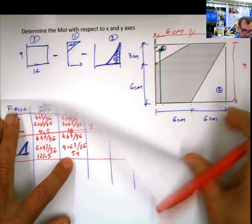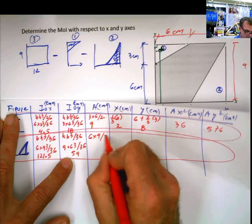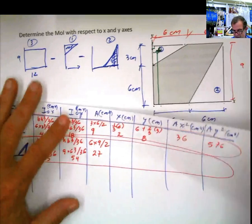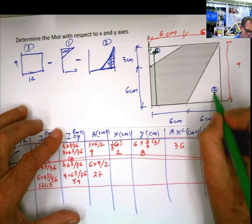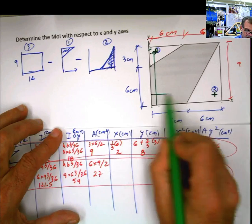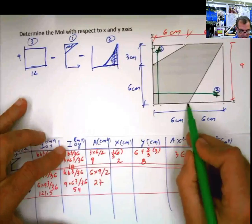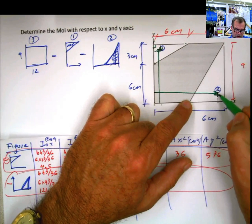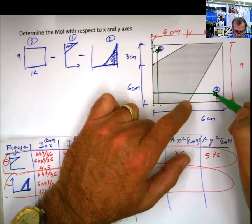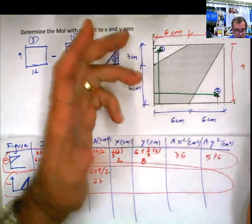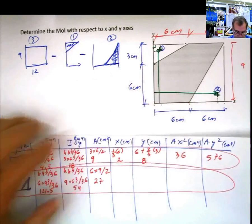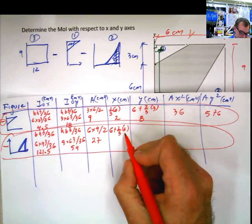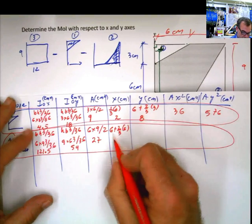Area. 6 times 9 divided by 2, 27. What is x? My centroid for figure 2 is located here. That means that x is going to be the distance from here to there. What is that? 6. But I know that this is 2 thirds of 6. Do you see how much it helps that you draw the centroid there? Then you don't even have to think. So this is going to be 6 plus 2 thirds of 6. 2 thirds of 6 is 4. 4 plus 6 is 10.